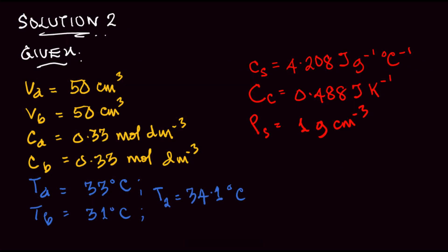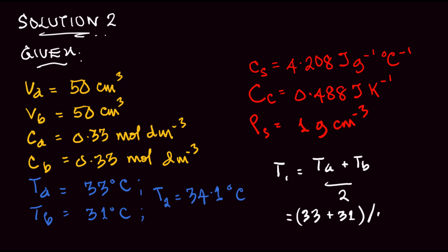Calculate the standard enthalpy of neutralization, given that the specific heat capacity of the solution is 4.208 joules per gram per kelvin. Unlike Example 1, we are given the initial temperatures of the acid and base separately and the heat capacity of the calorimeter. To get the initial temperature of the mixture, we find the average: T1 equals (Ta plus Tb) divided by 2, which is (33 plus 31) divided by 2, giving us 32 degrees Celsius. Note that 1 kelvin equals 1 degree Celsius, so no conversion is needed.